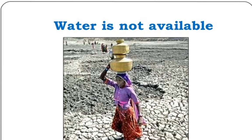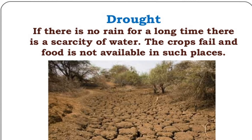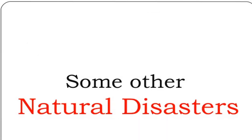All these disasters happen naturally, but we can deal with them by following certain ways. You can also help in times of disaster, especially if you live in a calamity-prone region where natural disasters occur regularly. First, be aware of the kind of disaster that can occur in your region, and practice how to leave your house quickly in case of an emergency.